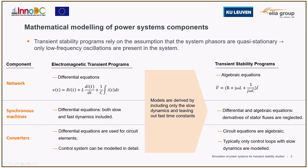The network equations are transformed from differential equations in EMTP to algebraic equations based on steady-state phasor equations. For synchronous machines, only the slow dynamics is included and the derivatives of the state fluxes are neglected in the simplified model. For converters, some simplifications are made in the circuit equations, which become algebraic, and in the control modeling — only the control loops with slow dynamics tend to be included.